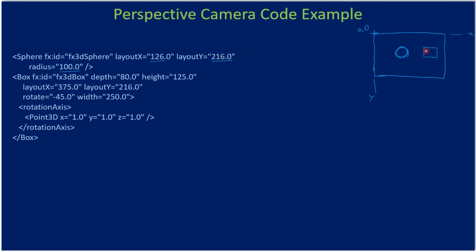The sphere is at layout x=126 and the box is at layout x=375, so the box is shifted to the right. The box also has a depth of 80, meaning it projects in the Z direction beyond the screen. Similarly for the sphere, with radius 100, half of the sphere is above the XY plane and half is below it — think of the XY plane as a sheet of paper.